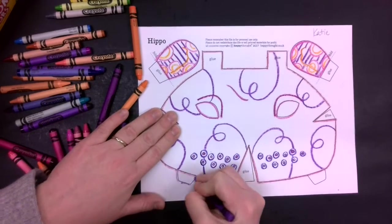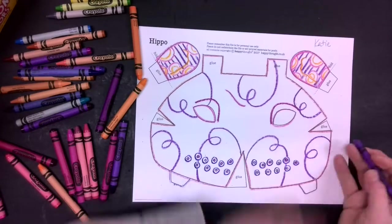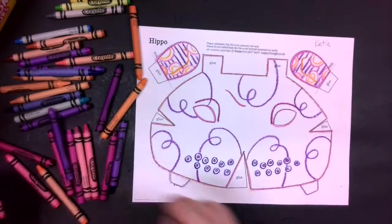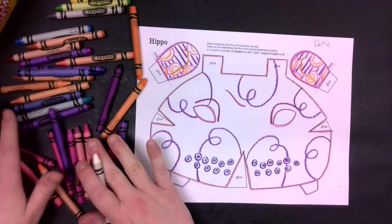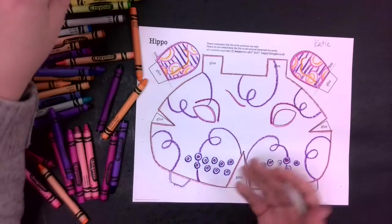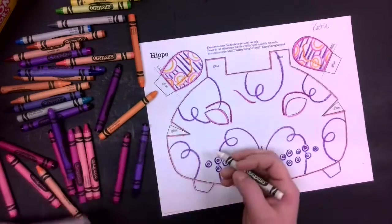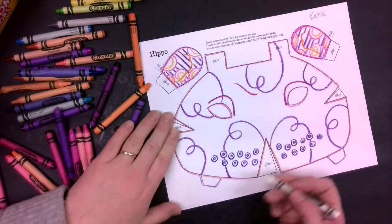Next class we're going to get out our watercolor paint and fill the extra areas in. If you're at home, you might be using crayon, crayon and marker, or if you have watercolor paint, you might use watercolor paint once we get to part two.